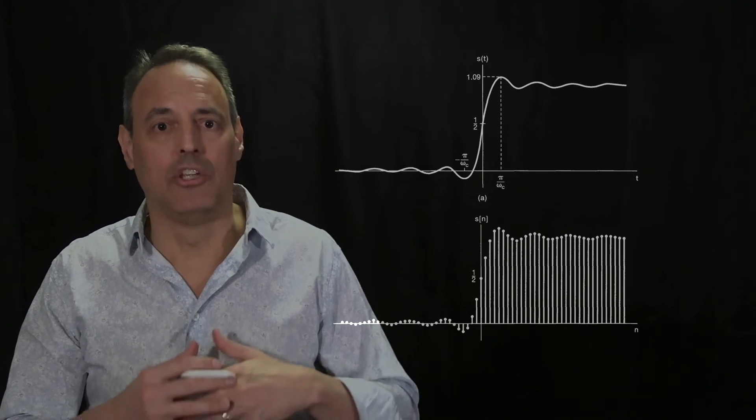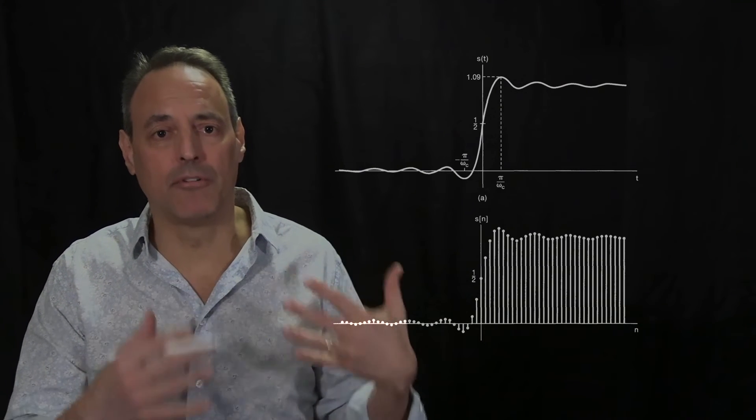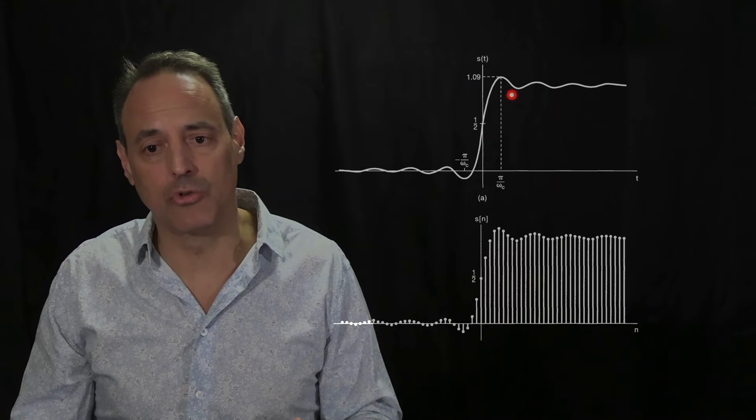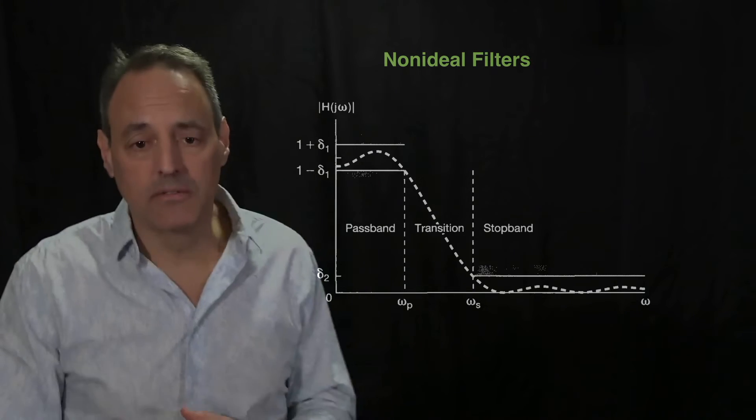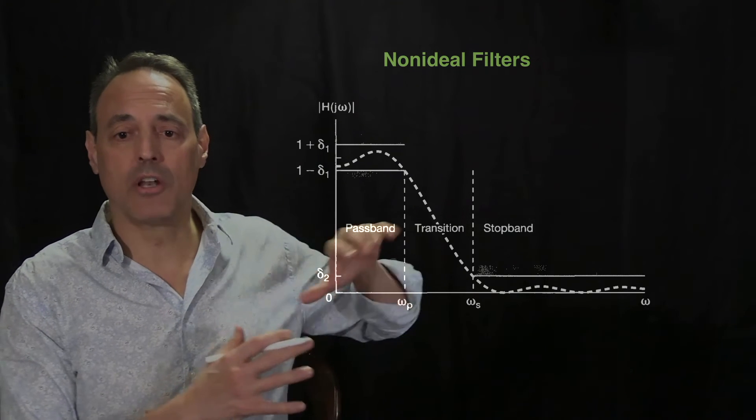Of course you don't actually get that — depending upon your filter you get overshoot and ringing, and what you'd like to engineer is to make the transition region as short as possible and the ring-down as fast as possible. These evaluation metrics tell you how quickly you can get back to the desired signal, which matters because all these electronics are usually operating on a very fast timescale, and waiting for the system to settle creates significant latency.